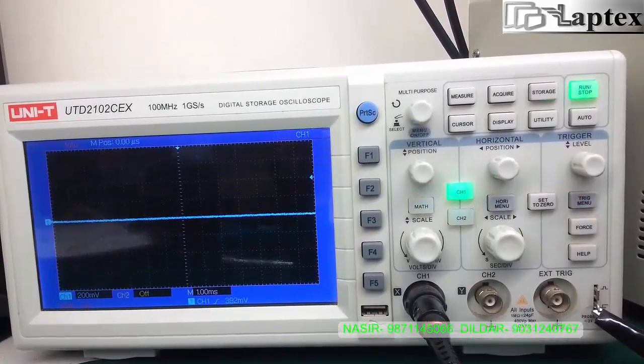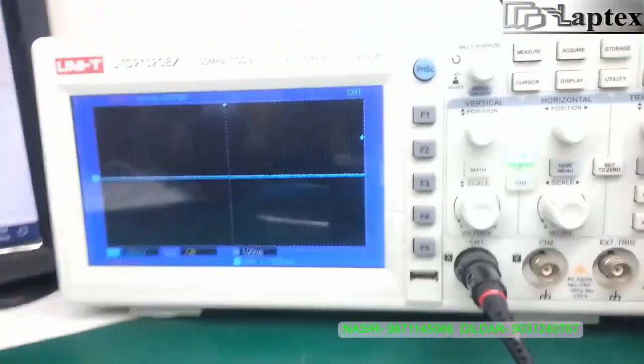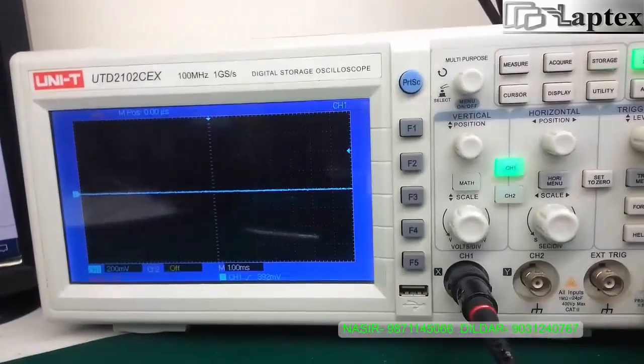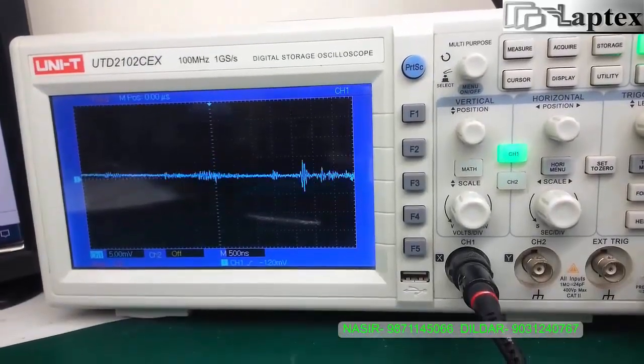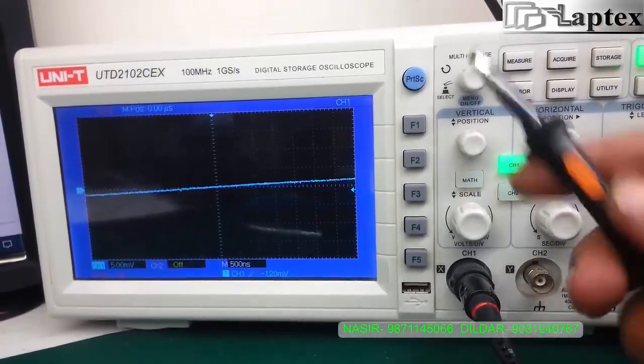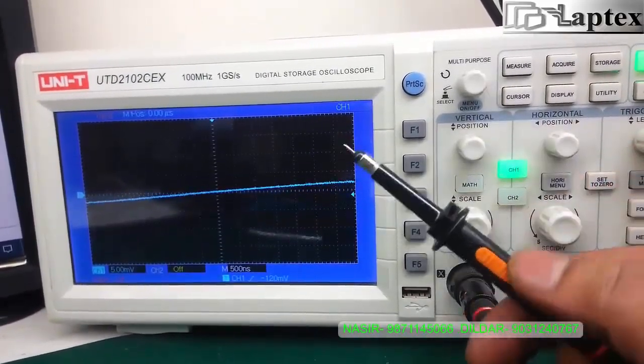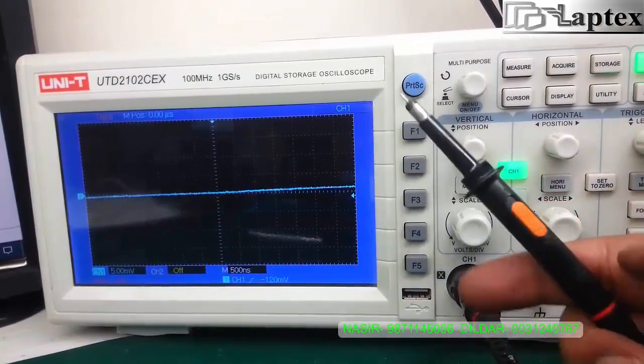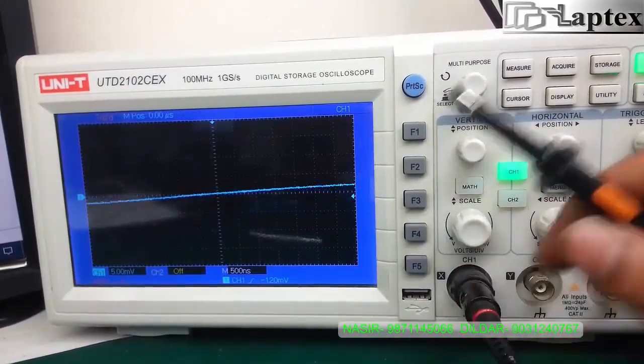So you have to change the coupling from DC to AC. Now we'll do a further setting and check whether the signal is appearing or not. As you can see, the signal is not appearing properly because it might be a very larger value signal. So we'll change the probe setting from x1 to 10x.